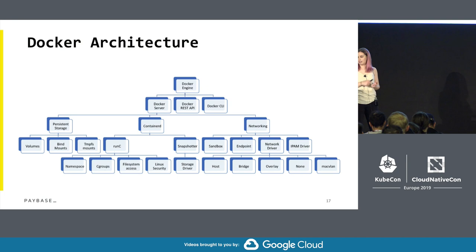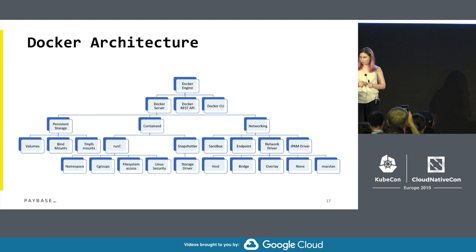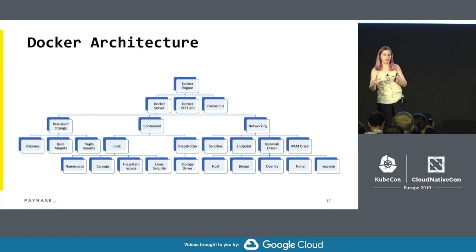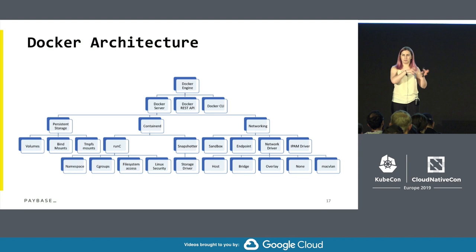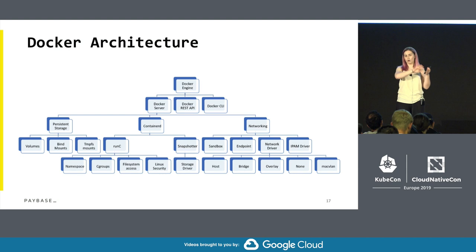This is the full feature set of Docker Engine — as you can see, it does a lot of things. Docker was the first open-source container runtime that was taking care of the whole lifecycle of containers: building images, pushing them, pulling them, creating running containers out of them, and so on. It was taking care of the whole lifecycle of containers.